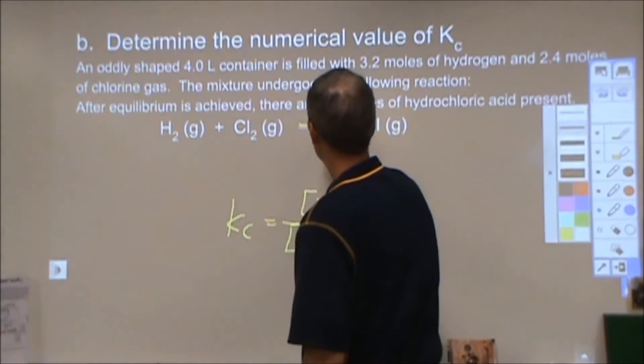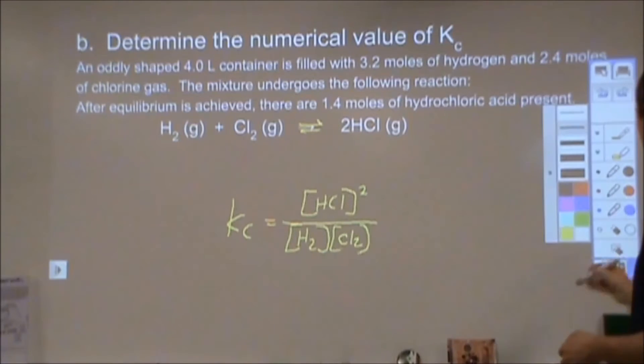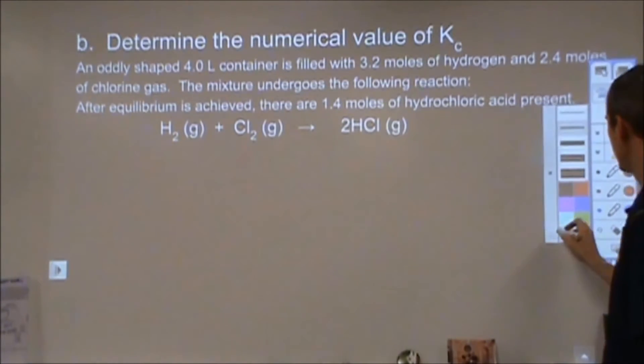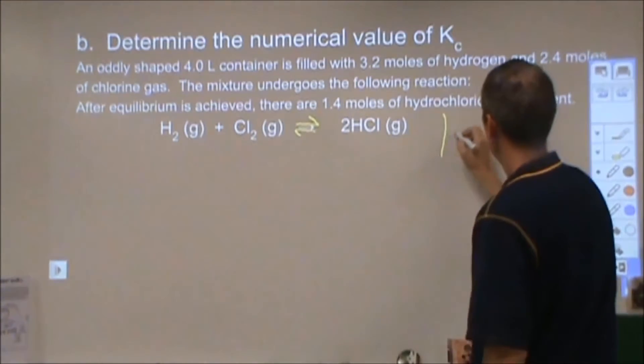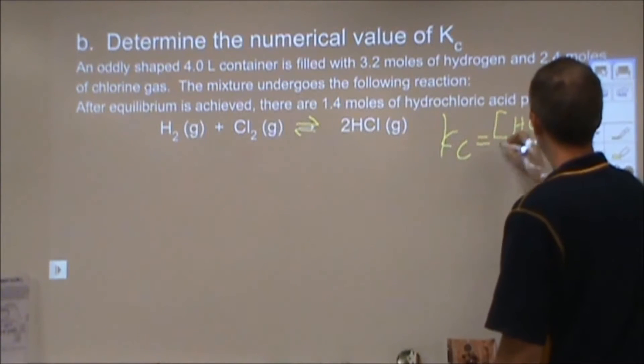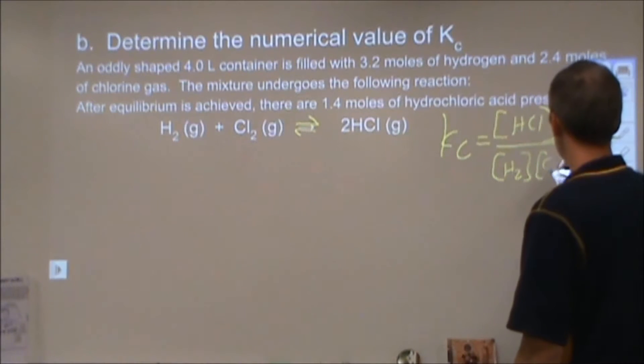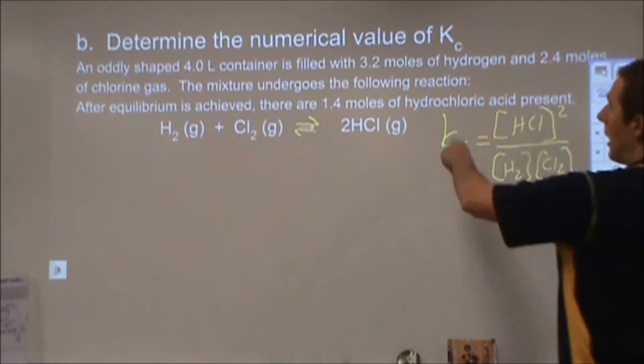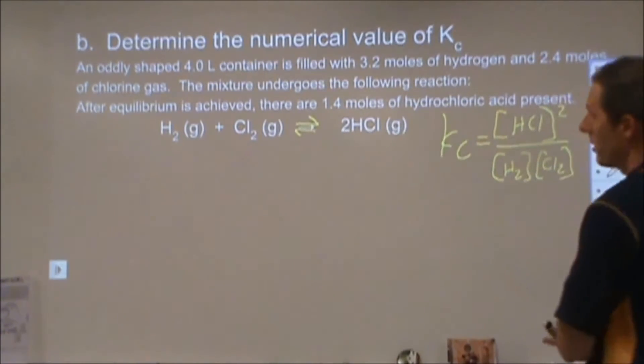So if it wants the numerical value of Kc, I'm going to rewrite this so I have a little more room. I need to figure out at equilibrium how much hydrochloric acid I have, how much hydrogen I have, and how much chlorine I have. It tells me some information about that. It tells me how much I start with of the two gases, and it tells me how much I end with of the product.